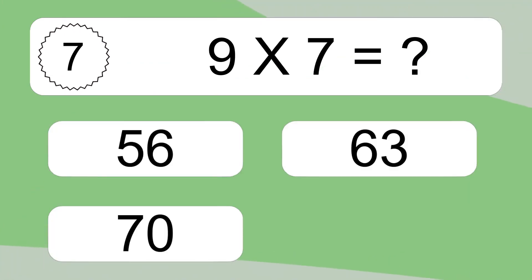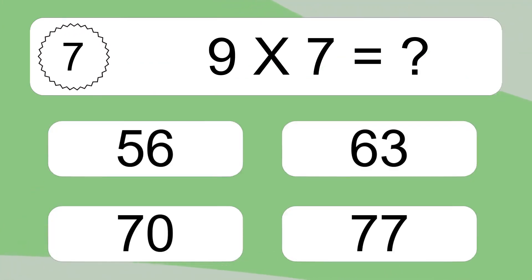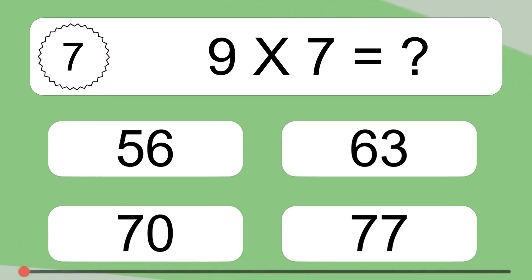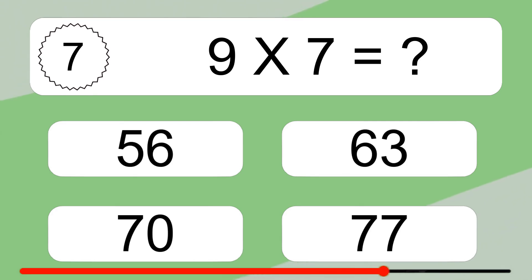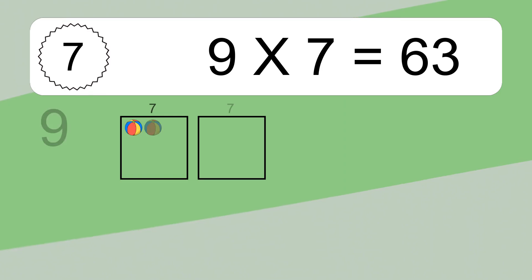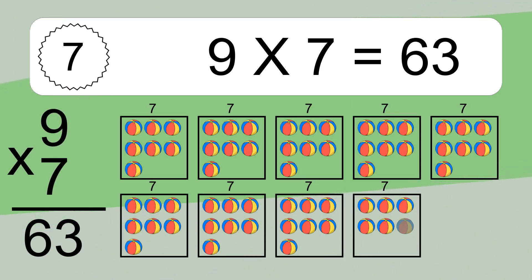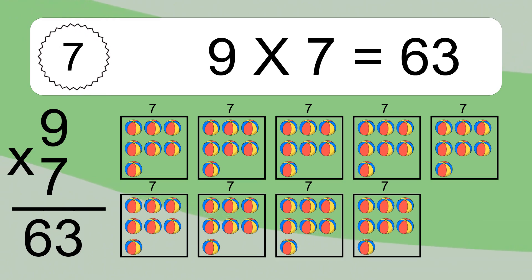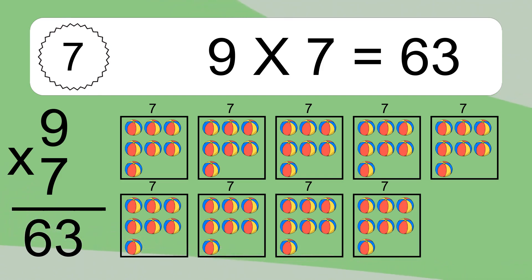9 times 7 equals what? 9 times 7 equals 63. We have 9 boxes, and each box has 7 colorful balls inside. If you count all the balls in all the boxes together, you will have 9 times 7 balls. This equals 63 balls.